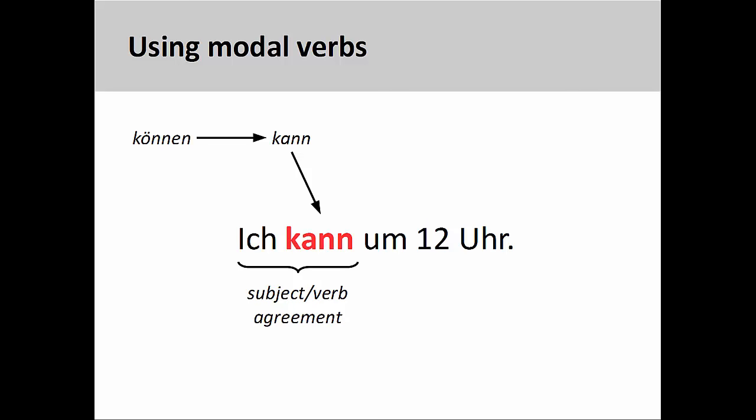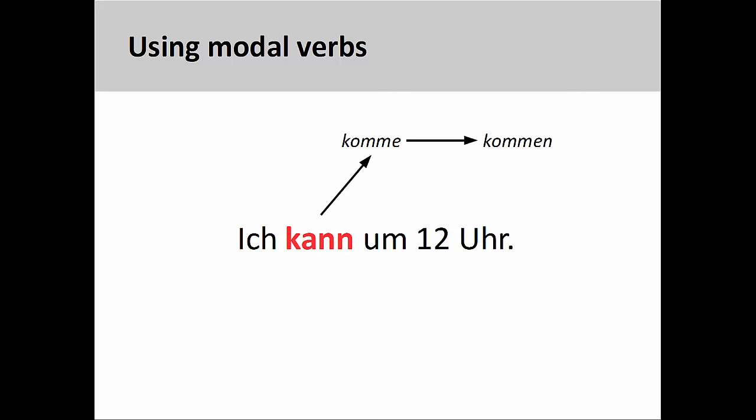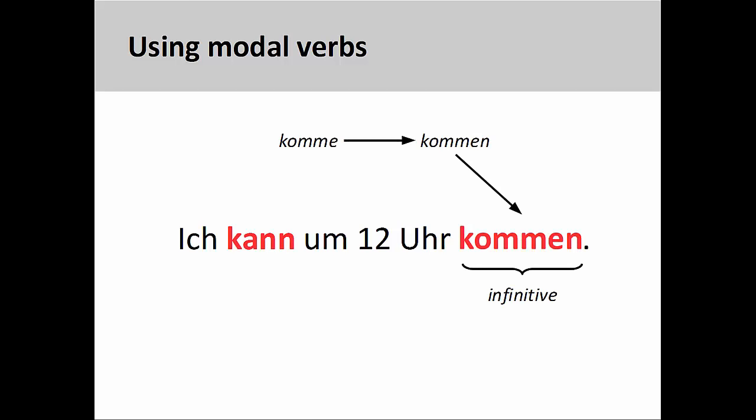The modal verb needs to be placed in the second position. To do this, I take the infinitive of the modal verb, conjugate it so that there is subject-verb agreement, and insert the modal verb into the second position. The verb that used to be in the second position is removed from the sentence and, since it no longer needs to agree with the subject of the sentence, reverts to its infinitive form. This infinitive form is then inserted at the very end of the sentence.